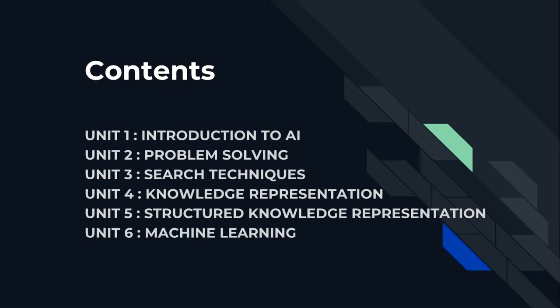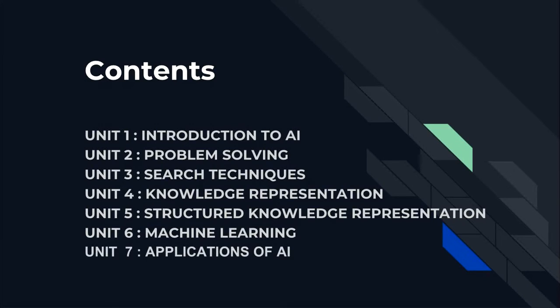In unit 6 we will be learning machine learning — the concept of it, examples, how a machine is trained, and so on. And in unit 7 we will be seeing applications of AI, which basically includes expert systems and neural networks.